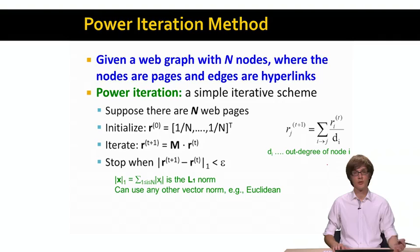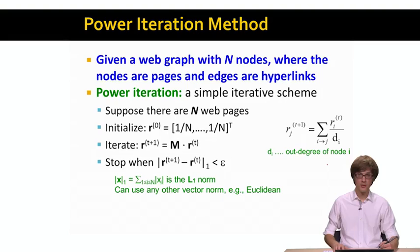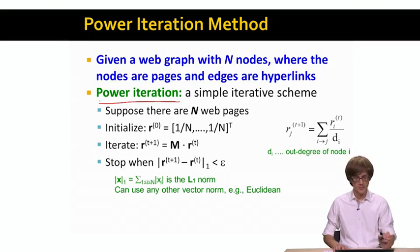It assumes that on the input we are given a big web graph on n nodes, where nodes are web pages and directed links correspond to hyperlinks. Power iteration is a very simple iterative scheme.